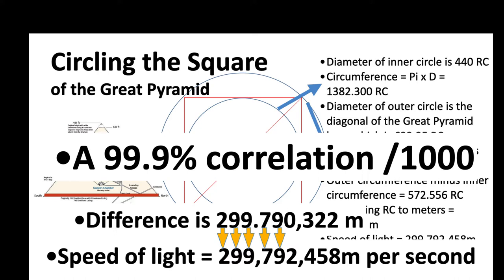I've done videos before about the speed of light in the Great Pyramid. I showed a way to calculate the speed of light based on the height and capstone. Many people have shown the GPS coordinates of the Great Pyramid are connected to the speed of light. But here's a third way the Great Pyramid is associated with the speed of light.